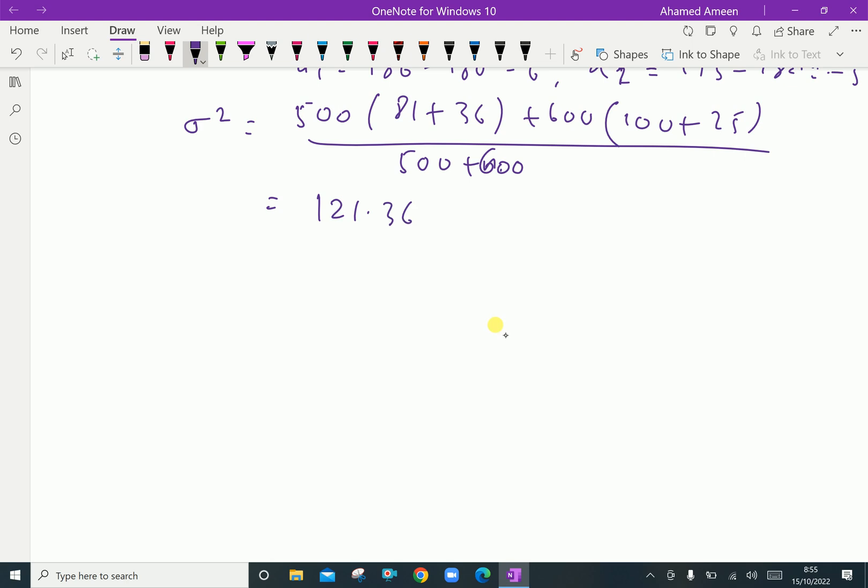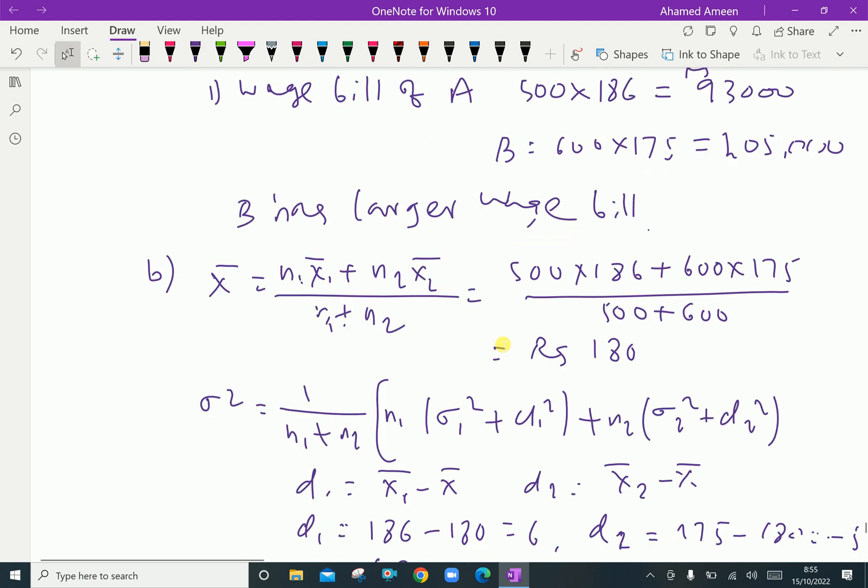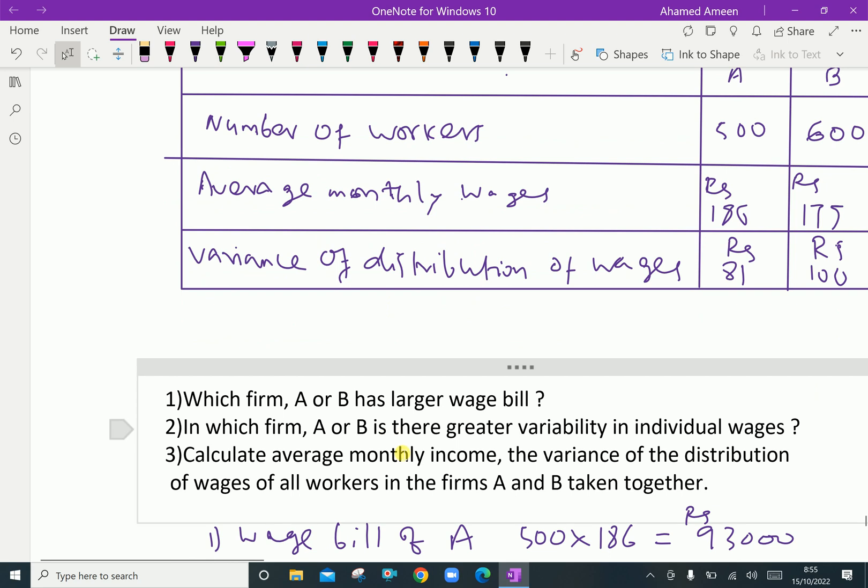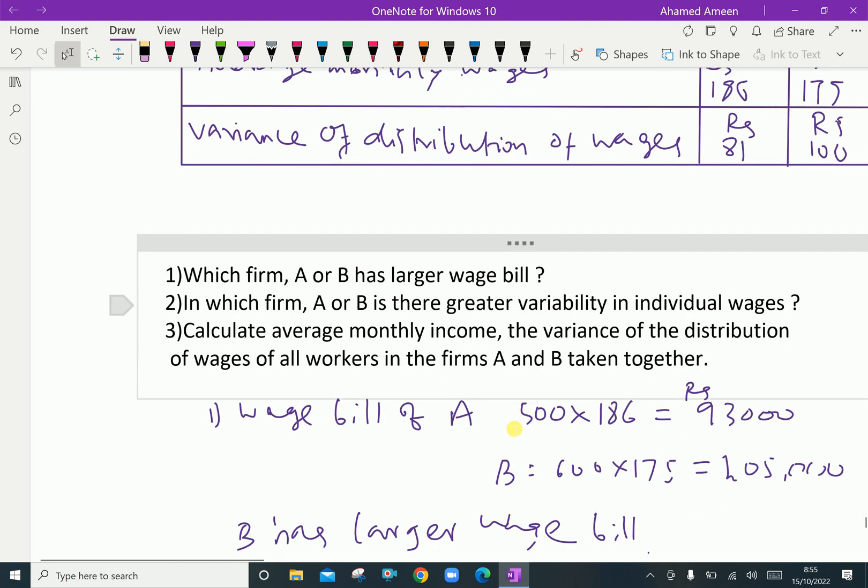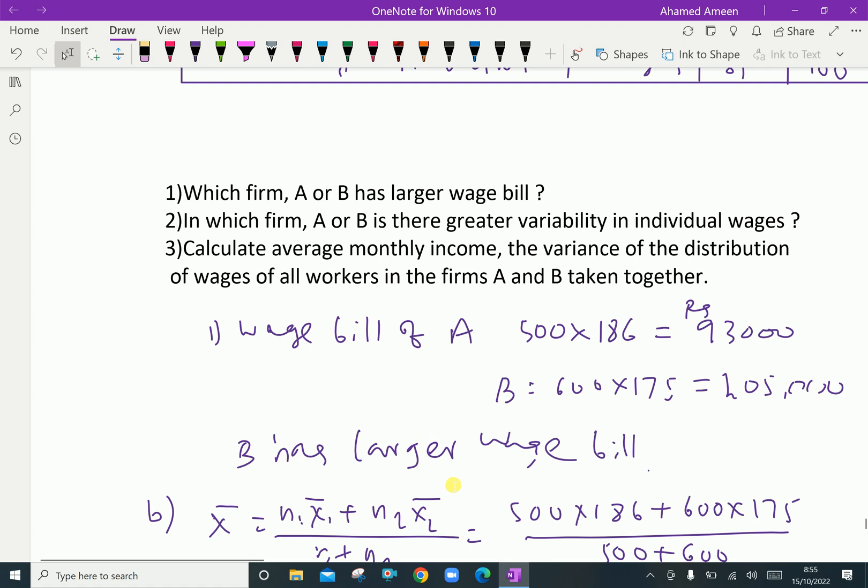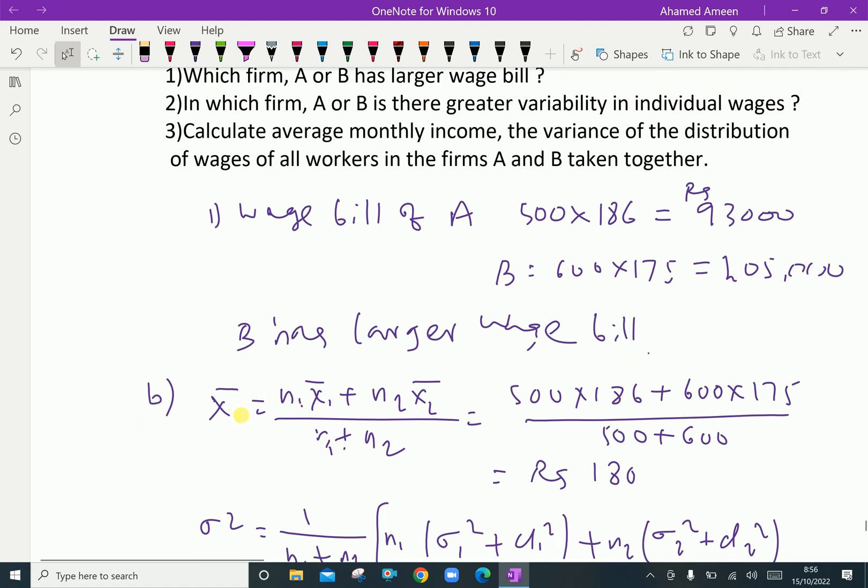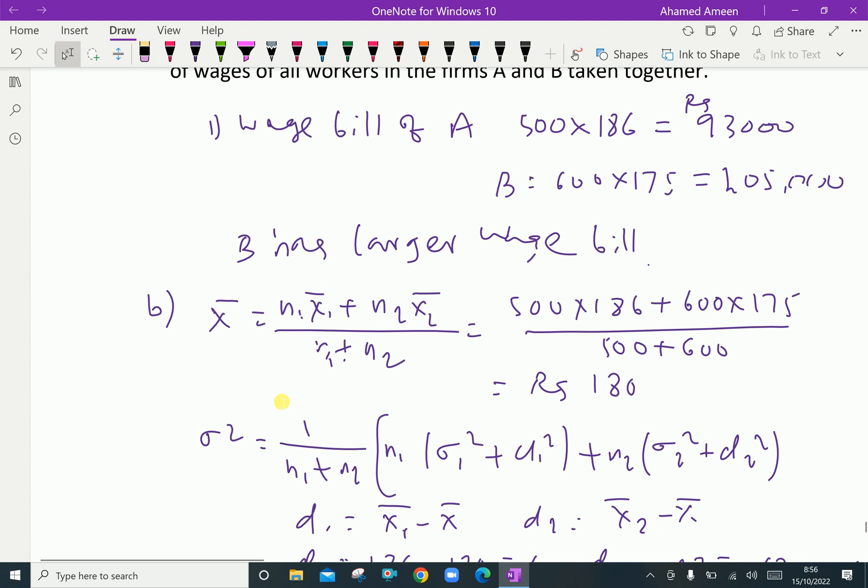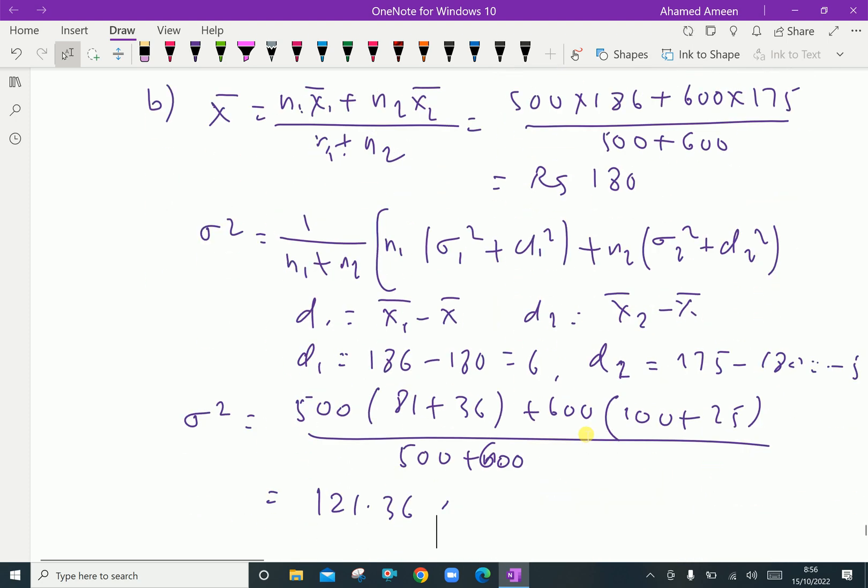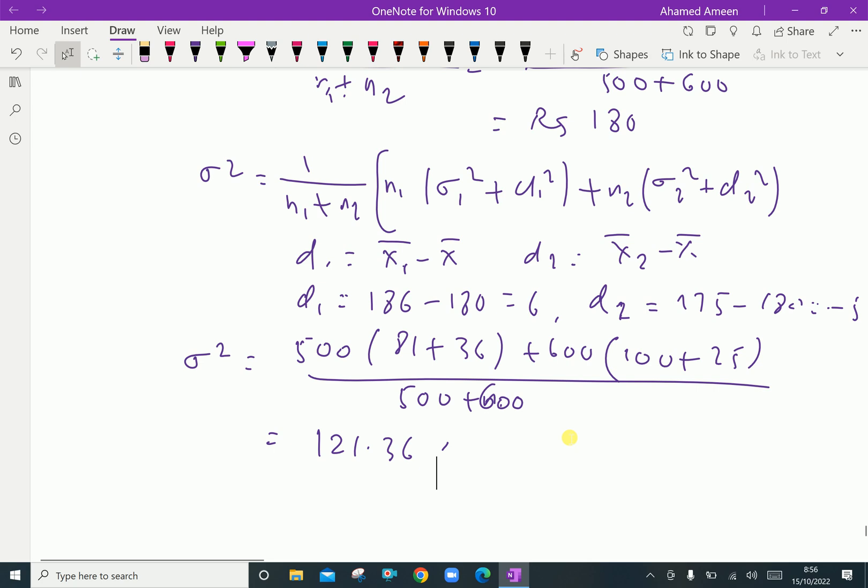The variance σ² is 121.36. We compared which firm A and B has larger variability, calculated the combined mean X̄, then using those values we calculated D1 and D2, and substituted them into the variance formula to get σ² = 121.36.